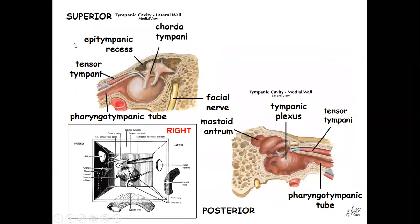From the lateral view of the middle ear, we can see the tympanic membrane, the epitympanic recess, the tensor tympani muscle, the chorda tympani nerve (a branch of the facial nerve), and the pharyngotympanic tube. The medial wall shows the tympanic plexus, tensor tympani muscle, and posterosuperiorly the mastoid antrum.